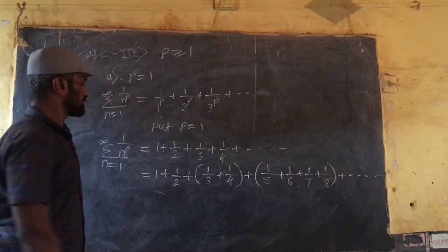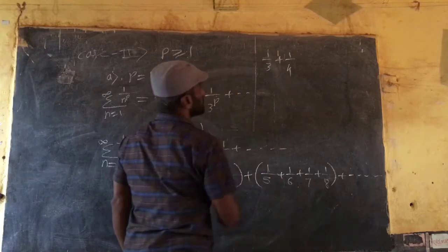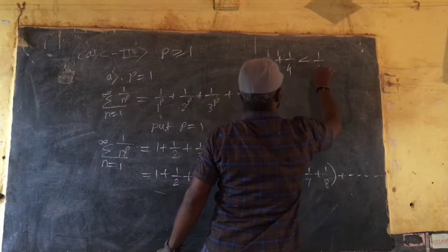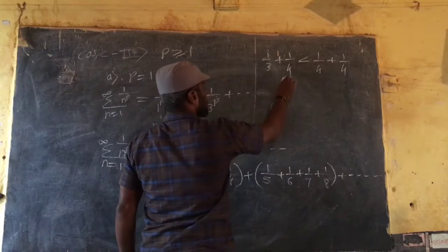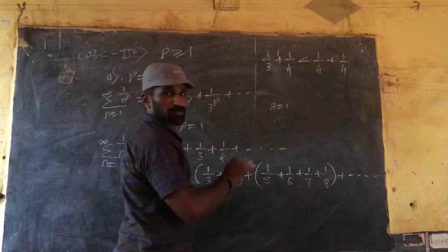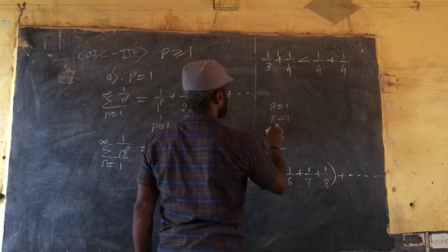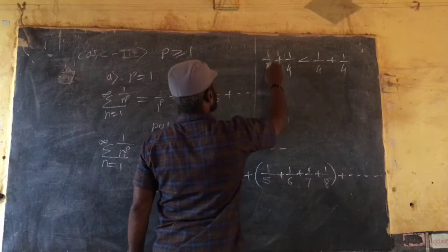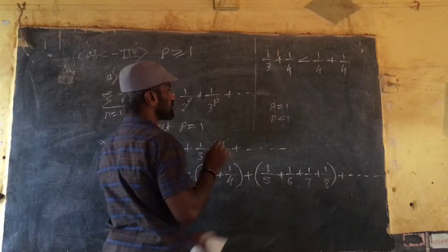Using that base, I can write 1 by 3 plus 1 by 4. It is less than 1 by 4 plus 1 by 4. Because when p is put 1 in the gap, second term to go get 2. P is less than 1 in the gap. The condition to go get, 1 divided by 4 is to p is not.